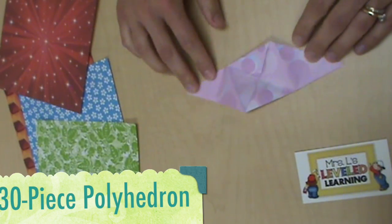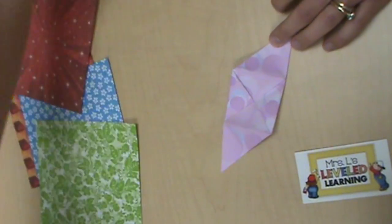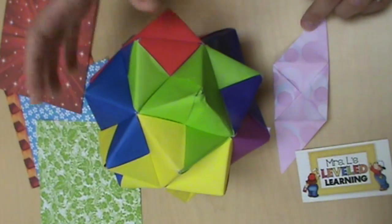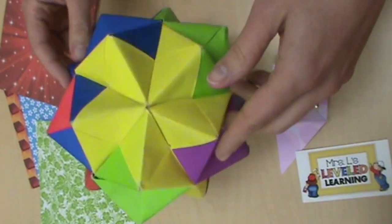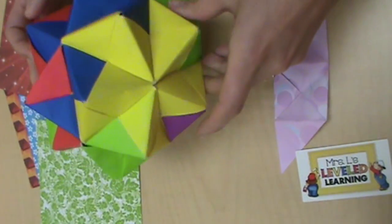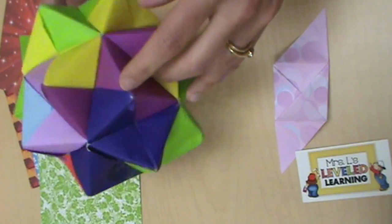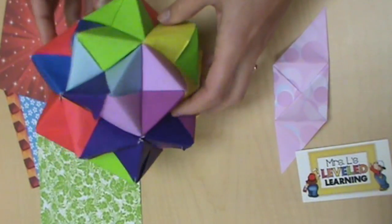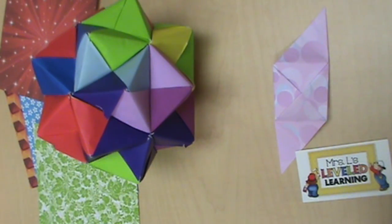If your class is up for a challenge, you can try to put 30 pieces together to represent your whole class. This is another version of a polyhedron. And I'm not going to show you how to make the whole thing because it takes a little while and you'll need some time to figure it out. But I will point out a few clues.